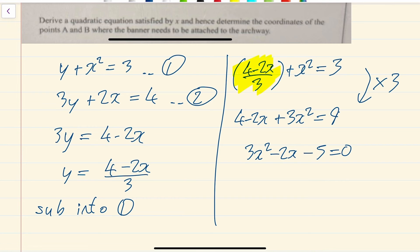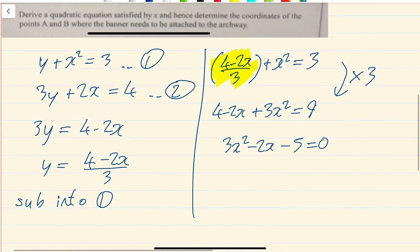So hopefully we can factorize this using our sum and product method. So my sum is minus 2. My product is minus 15. So I need to find two numbers that multiply to give minus 15 and add to give minus 2. So minus 5 and 3 would work.